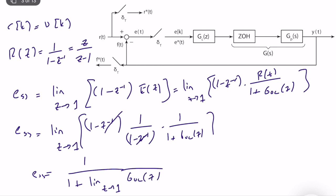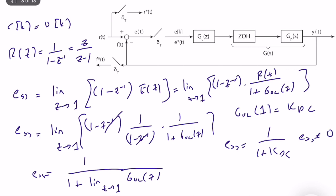So we want lim_{z→1} G_OL(z) to be as large as possible. There are two cases: it can be constant, which we call K_dc (the DC gain), giving steady-state error = 1/(1 + K_dc); or it can go to infinity, giving steady-state error = 0.